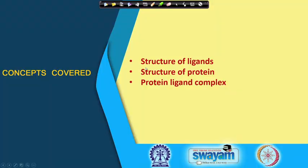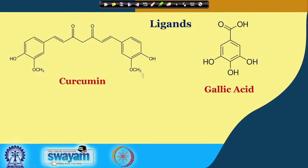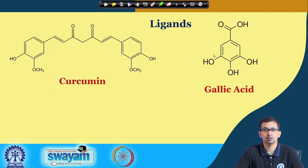I will show you the structure of the ligands, the structure of the protein, and the protein-ligand complex. We have taken two ligands: the first is curcumin and the second is gallic acid. The structure of these two compounds most of you might already be familiar with. We will see how the structure looks when taken to a computational level.